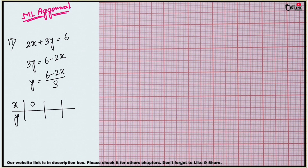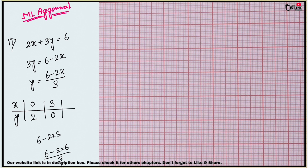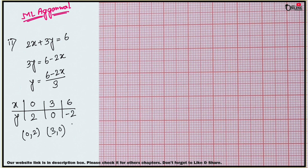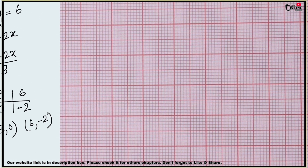If x = 0, y = (6-0)/3 = 2. If x = 1, y = 4/3 — that's a fraction, so skip it. If x = 3, y = (6-6)/3 = 0. If x = 6, y = (6-12)/3 = -6/3 = -2. So the coordinates are (0, 2), (3, 0), and (6, -2).